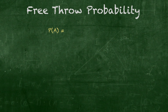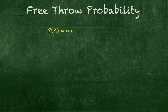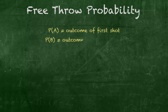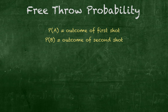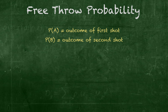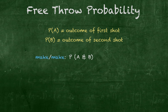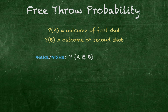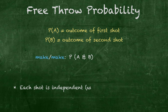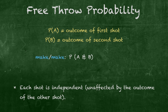P of A is the probability of event A occurring. In this case, the probability of his first shot. We'll let P of B stand for the probability of his second shot. Now we can create all types of scenarios. Let's say we wanted to know the probability of making both shots, represented as P of A and B. For our calculation to work, we have to assume each shot is an independent event.